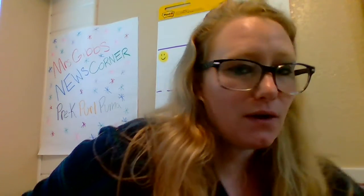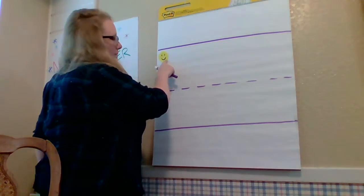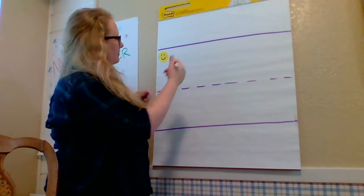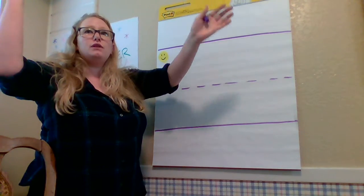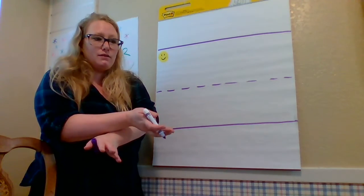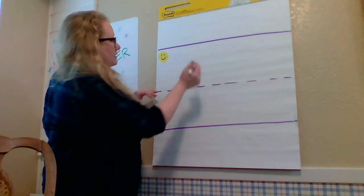So we're going to write the letter X. We always start at the top. So I have my little happy face right here. So with an X, it's going to be two diagonal, straight, long lines.